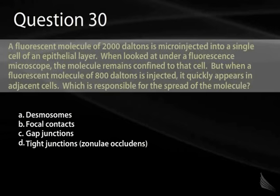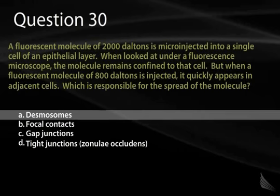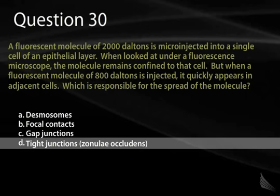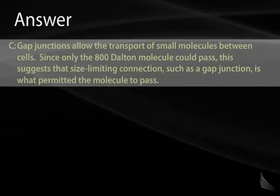Question 30. A fluorescent molecule of 2,000 Daltons is microinjected into a single cell of an epithelial layer and remains confined to that cell under fluorescence microscopy. But when a fluorescent molecule of 800 Daltons is injected, it quickly appears in adjacent cells. Which structure is responsible? A, desmosomes. B, focal contacts. C, gap junctions. Or D, tight junctions? The correct answer is C, gap junctions. The question itself defines what gap junctions do: large molecules are retained within a cell, while small molecules diffuse to adjacent cells through gap junctions.